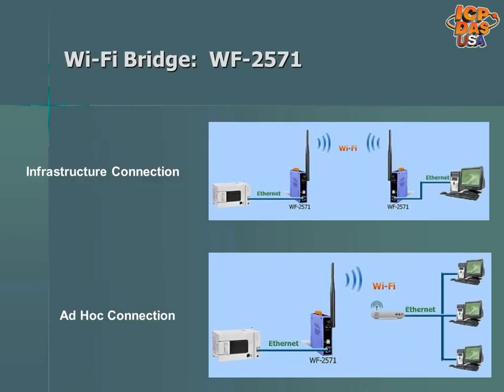Wi-Fi communication operates over the 2.4 GHz band. Many devices communicate over Wi-Fi like computers, smartphones, tablet computers, digital music players, data acquisition modules, and printers. Wi-Fi bridge devices like WF2571 can allow computers to wirelessly communicate with PLCs or other devices with Ethernet communication over the Wi-Fi network. They support WEP, WPA, and WPA2 wireless security.